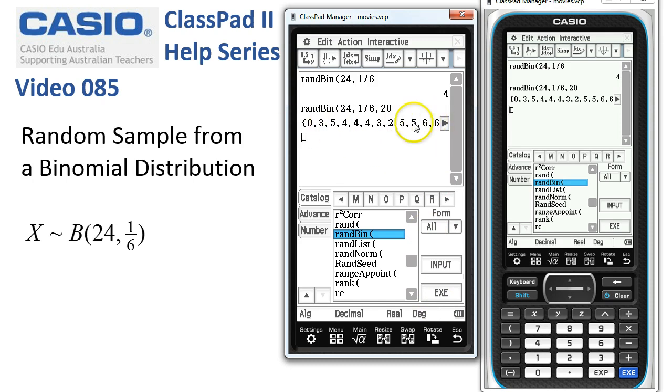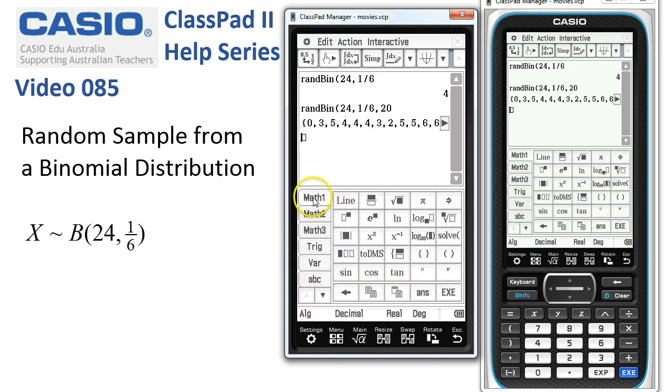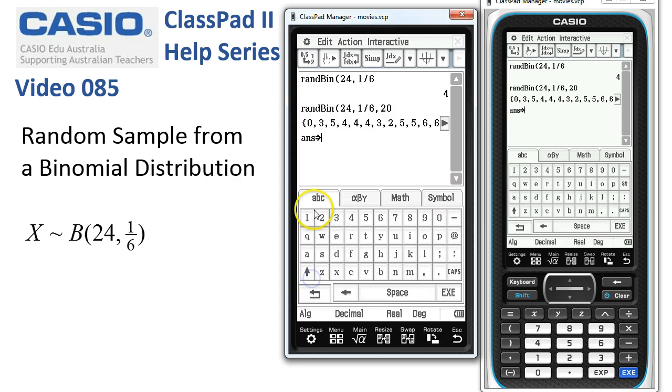To actually analyze your sample or to summarize it it's probably best to put it into statistics so to do that we'll tap back up to math one and we'll tap answer for this list of values and we'll store them into list one so we'll go to the ABC tab and type in list one.